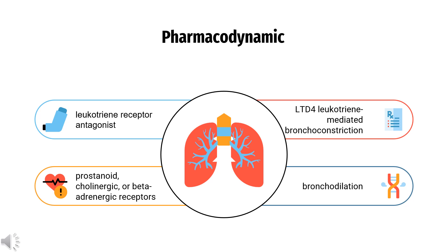Sulfidopeptide leukotrienes — LTC4, LTD4, LTE4, also known as the slow-releasing substances of anaphylaxis — and LTB4, a chemo-attractant for neutrophils and eosinophils, are derived from the initial unstable product of arachidonic acid metabolism, leukotriene A4 (LTA4), and can be measured in a number of biological fluids, including bronchoalveolar lavage fluid (BALF) from asthmatic patients. In humans, pre-treatment with Zileuton attenuated bronchoconstriction caused by cold air challenge in patients with asthma.